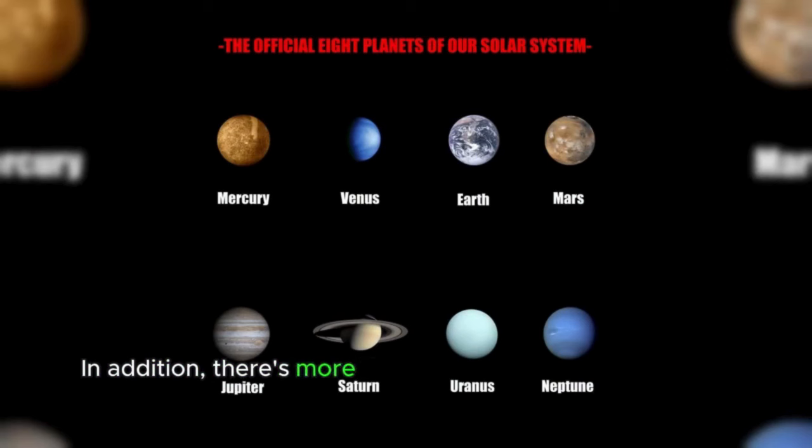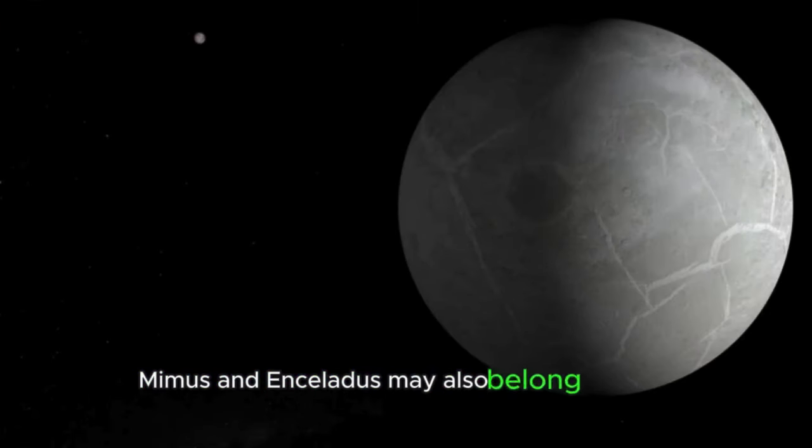In addition, there's more than one cold planet in our solar system on which life is possible. Mimas and Enceladus may also belong to them.